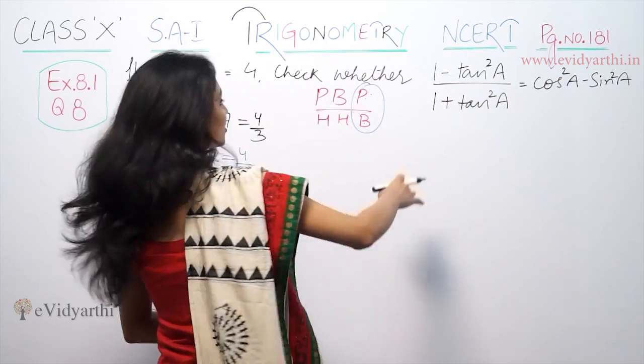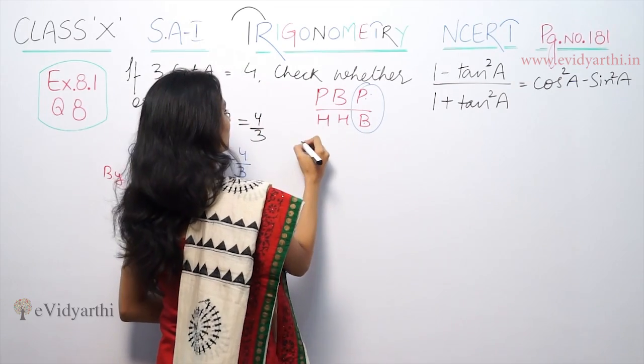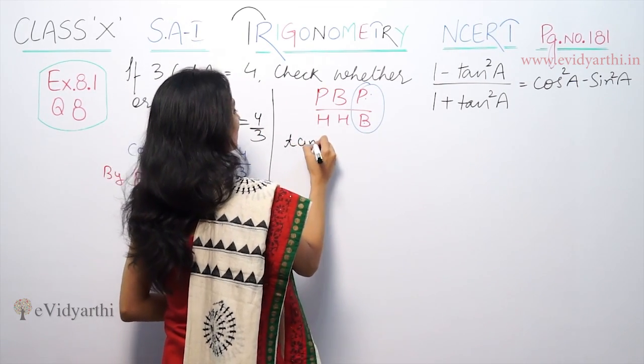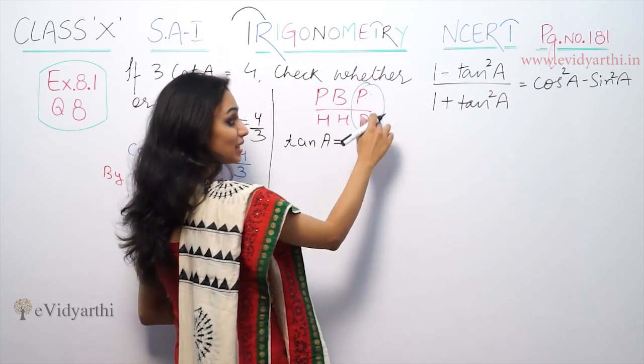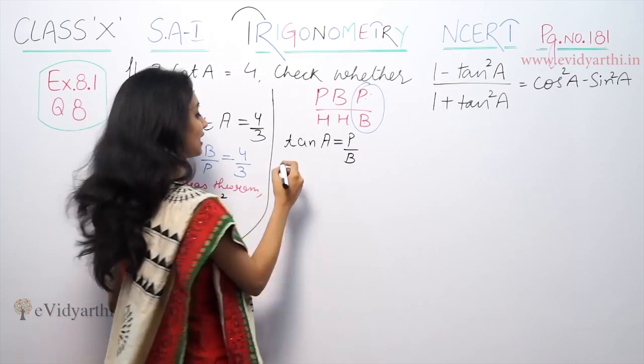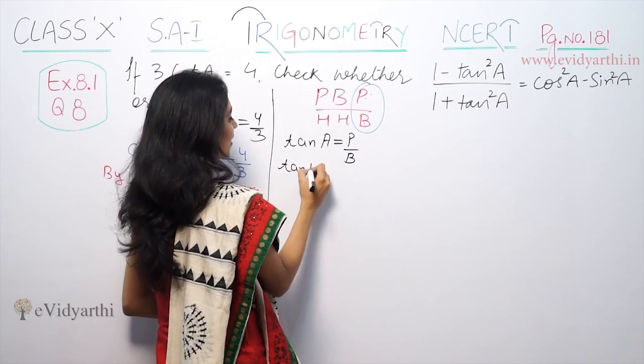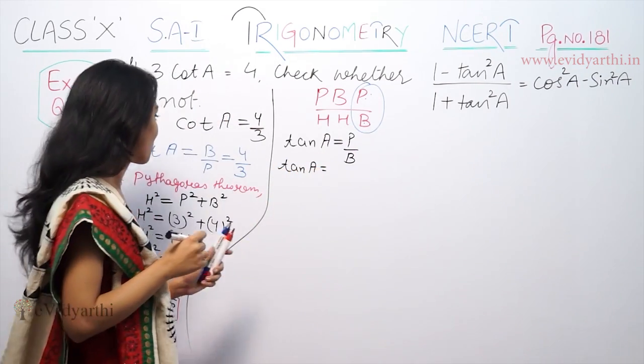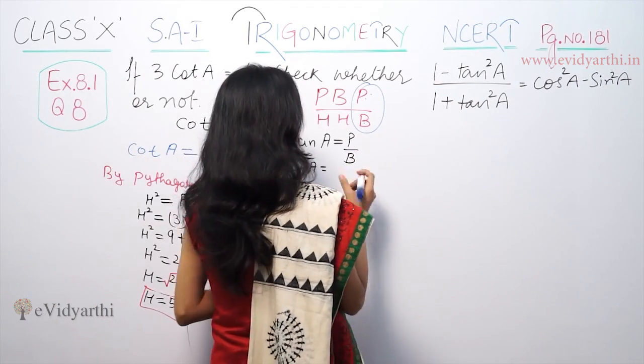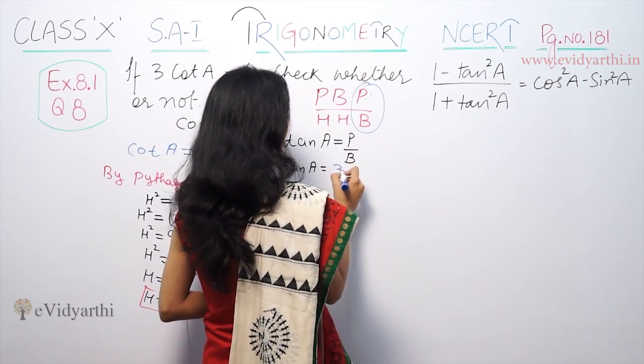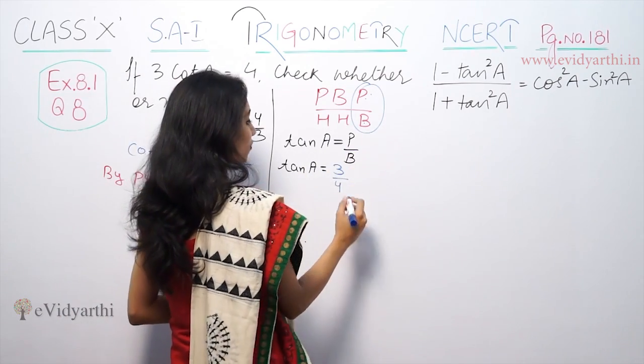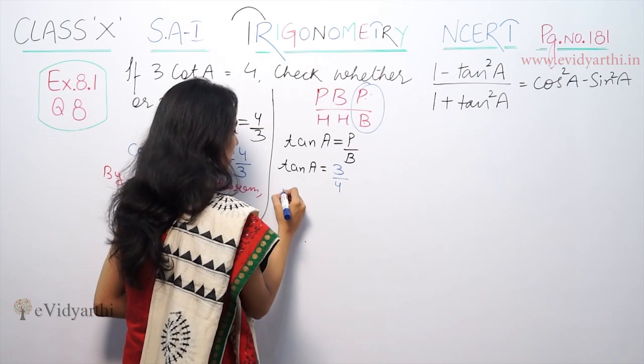Next we will check tan A. The formula is perpendicular by base. Tan A equals 3 upon 4, that is 3 by 4. Now we have to check this equation.